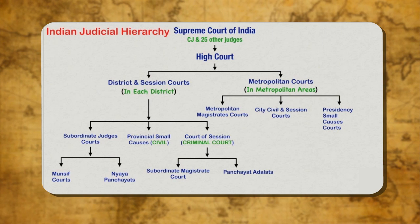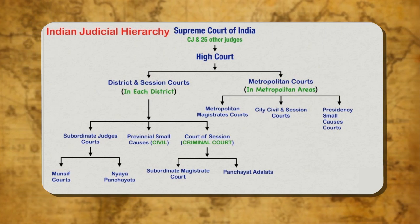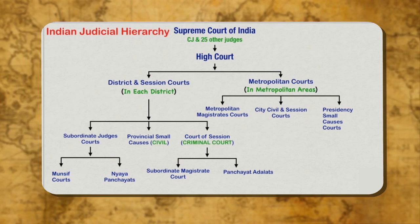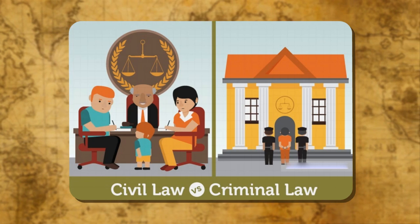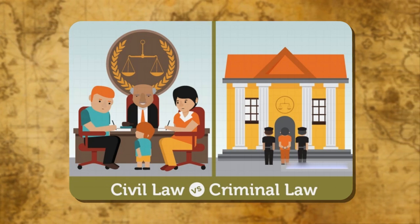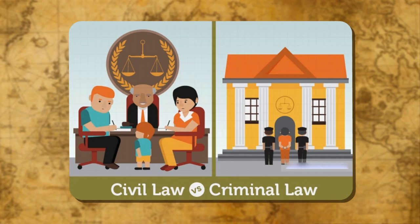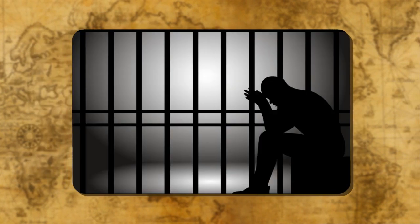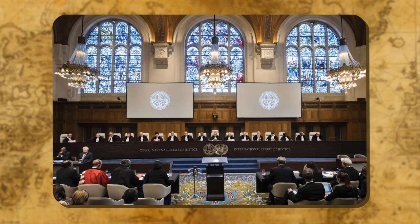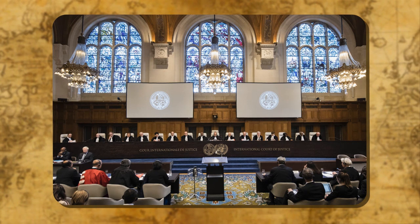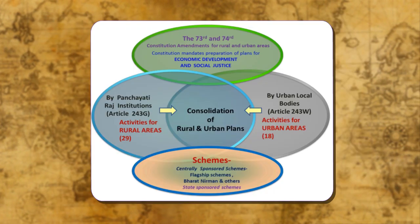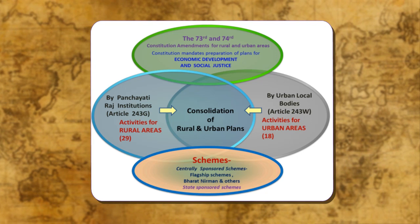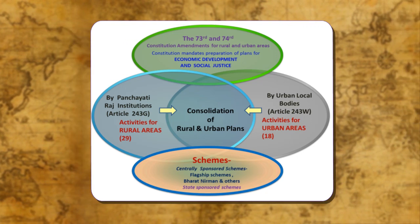The judiciary has the Supreme Court at its apex, 21 high courts and numerous civil, criminal and family courts at the district level. The basic civil and criminal laws governing citizens of India are set down in major parliamentary legislations such as the Civil Procedure Code, the Indian Penal Code, and the Criminal Procedure Code. India accepts the International Court of Justice jurisdiction with several reservations. By the 73rd and 74th amendments to the constitution, the Panchayat Raj system has been institutionalized for local governance.